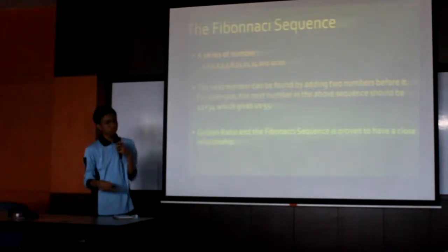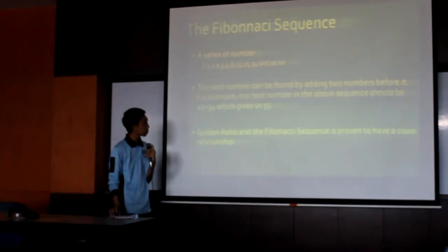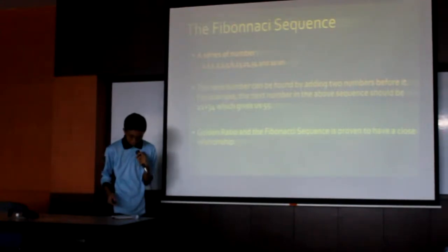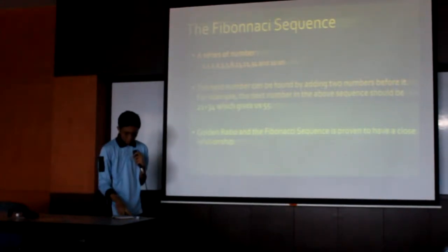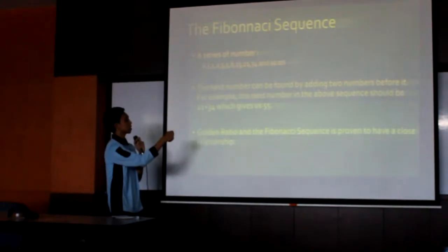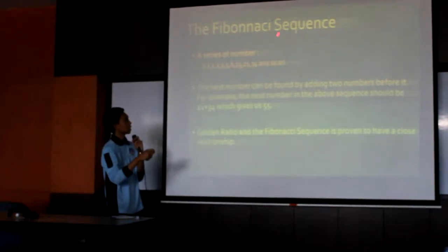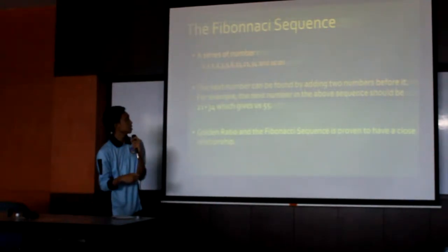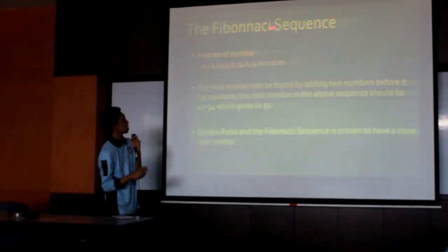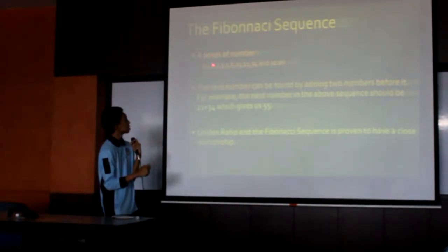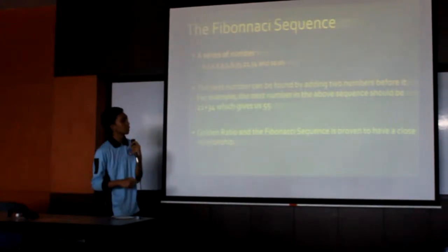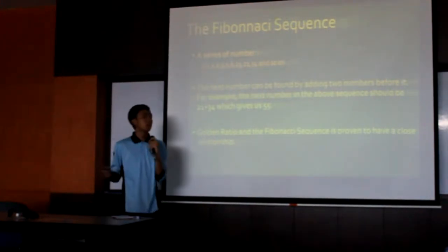Now, the Fibonacci sequence. Surprisingly, the golden ratio and this sequence share a special relationship. The Fibonacci sequence is a series of numbers: 0, 1, 1, 2, 3, 5, 8, 13, 21, and 34.